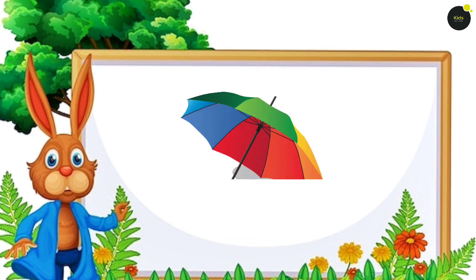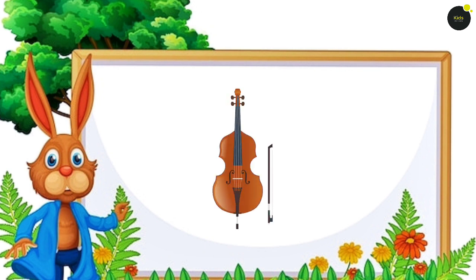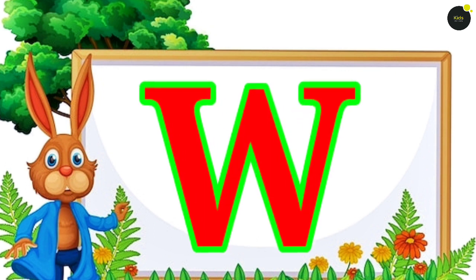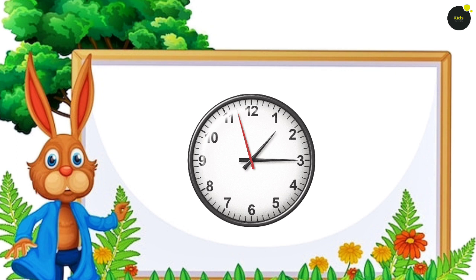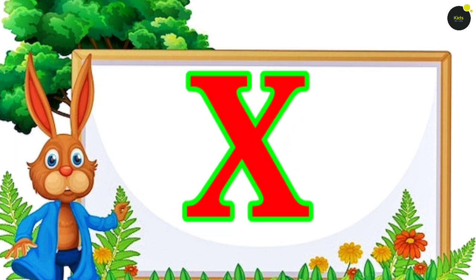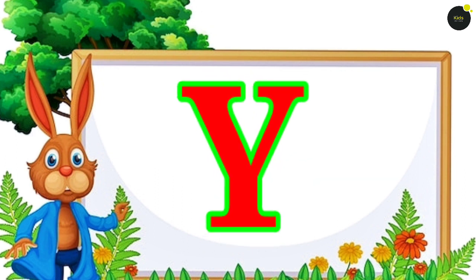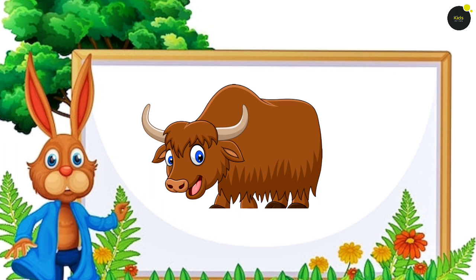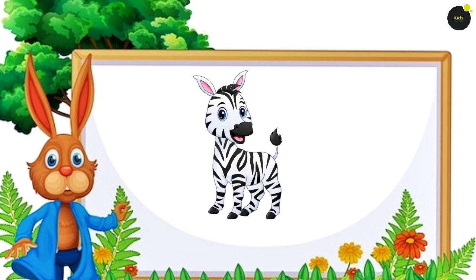U for Umbrella. V for Wild. Wild means Wild. W for Watch. Watch means Tali. X for Xylophone. Xylophone means Xylophone. Y for York. York means York. Z for Zebra. Zebra means Zebra.